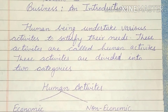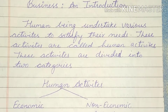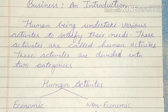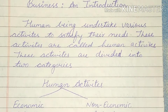Economic activities are those activities which are performed to earn money. A human being conducts economic activities to earn money. The activities by which a human being is able to earn money are called economic activities. For example, your father goes to office, runs a shop, or works on a farm — and earns money from these activities.